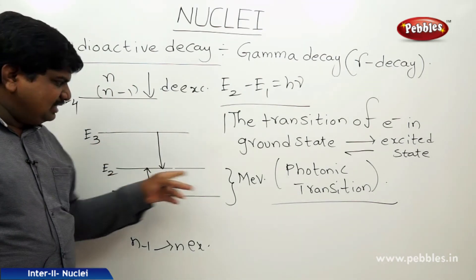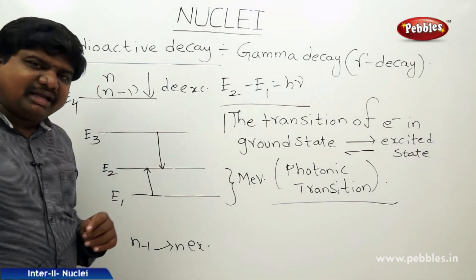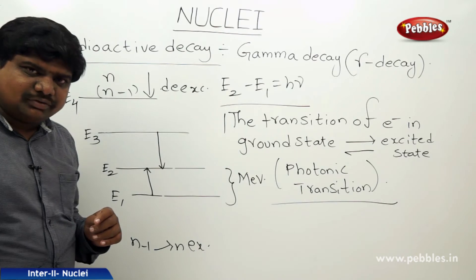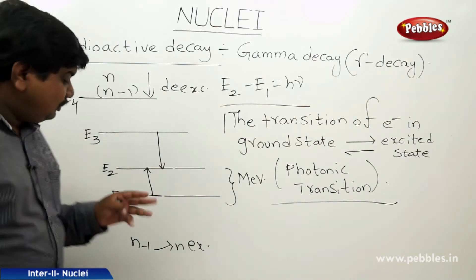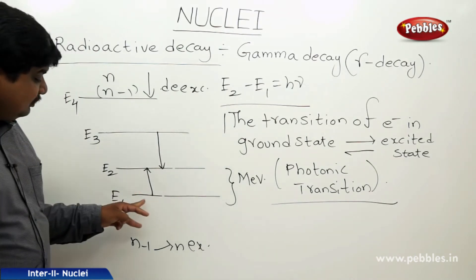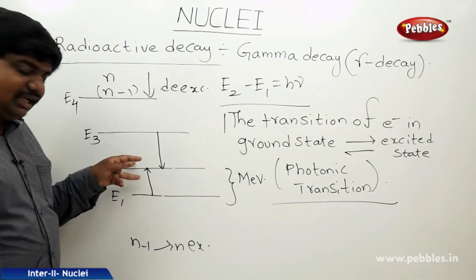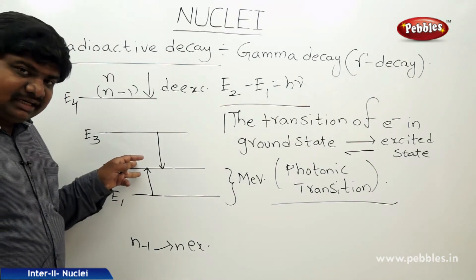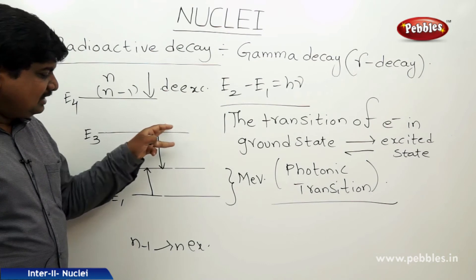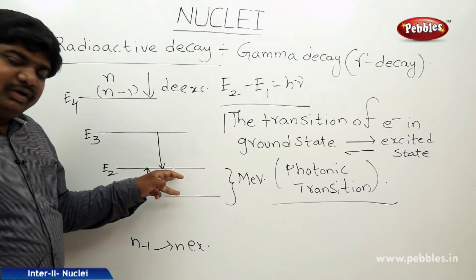The energy difference between these states is in the order of mega electron volts. An electron can be in the ground state or in a higher energy state, and from the higher state it can transition to the next lower state.